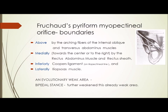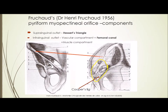This area is generally known as the myopectineal orifice - 'myo' because it has both muscles and a forebone as boundaries. Above we have the arching fibers of the internal oblique and transversus abdominis, then the ligament, laterally the iliopsoas muscle, then the pubic bone and the iliopectineal line, and medially the lateral part of the rectus muscle along with the transversus abdominis. This is an evolutionary weak area, and bipedal stance further increases its weakness. The myopectineal orifice was first described in 1956.